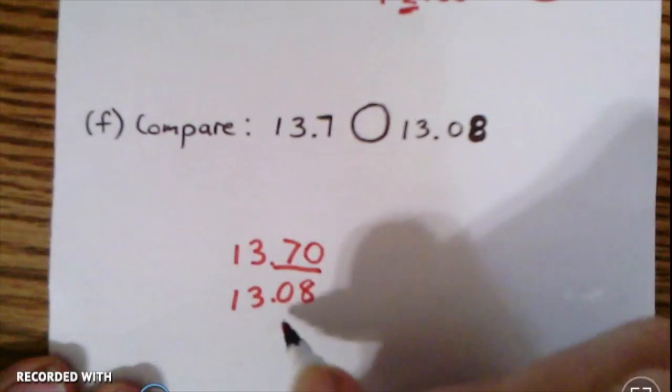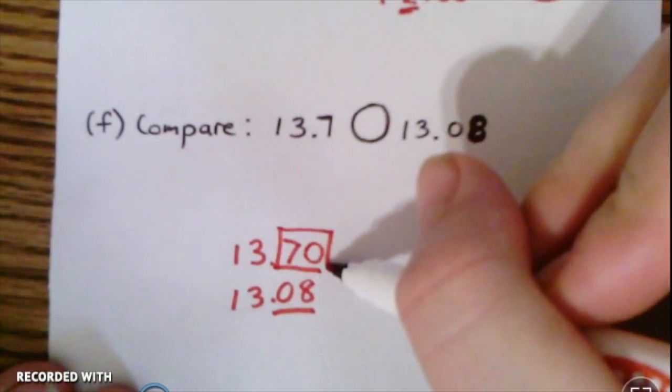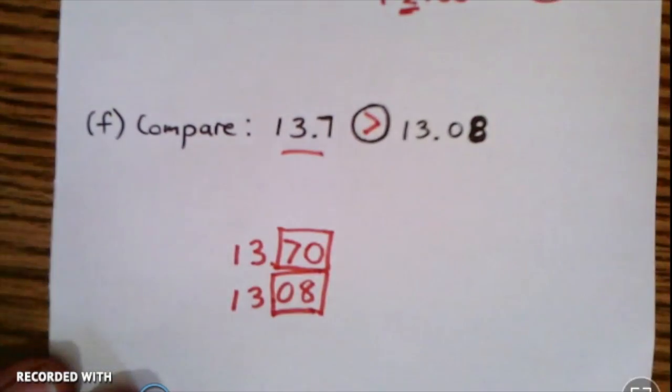Now we're going to compare just the decimal number. So in this one I have a 70, and in this one I have just 8. So which one is bigger? Right, the 13.7. So we show that with the open part facing that.